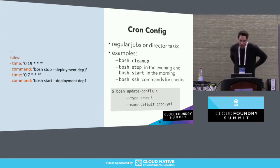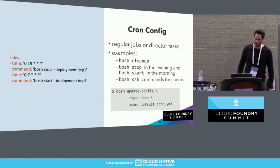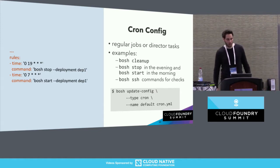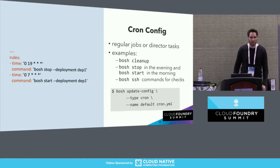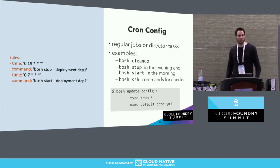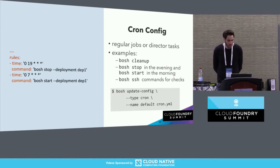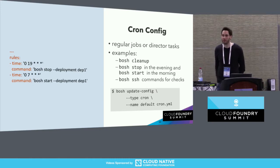The include and exclude keys allow rules for deployments and task types. In the example, no tasks should be processed for 'dep1,' and task types VMs, SSH, and logs are prioritized over other task types. This is useful so that if your BOSH director is under heavy load, operators can still do root cause analysis. Another use case in the backlog — not yet implemented — is a cron config for scheduling regular jobs or director tasks, such as regular BOSH cleanup, stopping BOSH in the evening, or starting in the morning to save resources on dev landscapes.